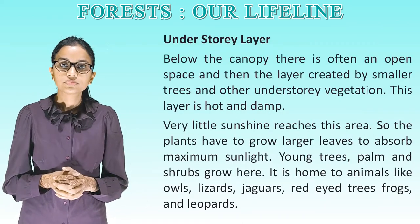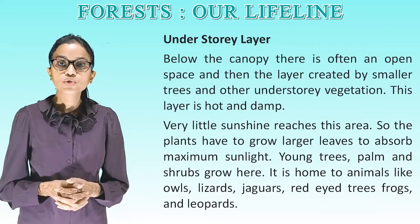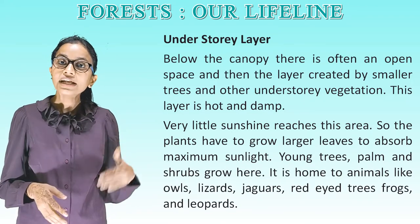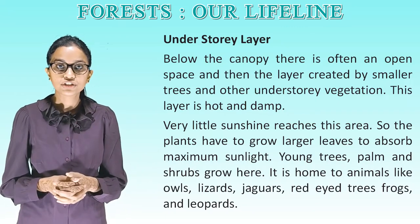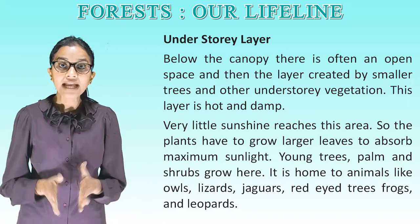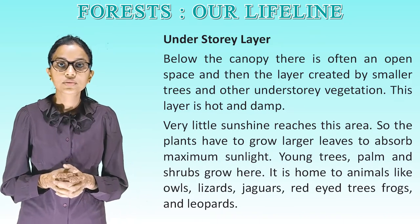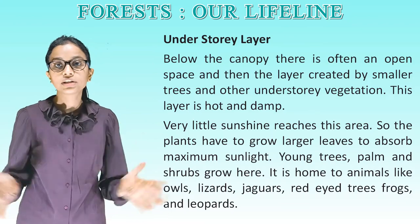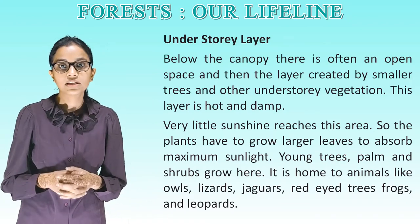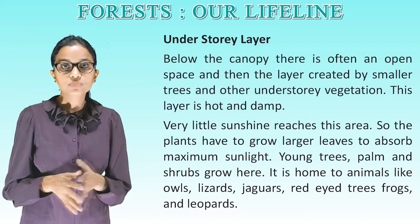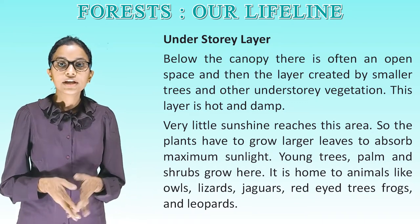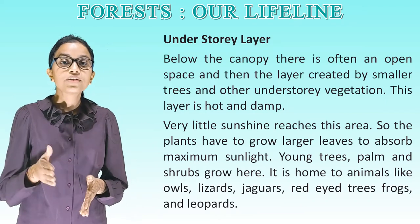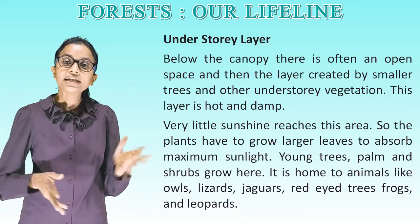Understory layer: Below the canopy there is often an open space, then the layer created by smaller trees and understory vegetation. This layer is hot and damp. Very little sunshine reaches this area, so the plants have to grow larger leaves to absorb maximum sunlight. Young trees, palms and shrubs grow here. It is home to animals like owls, lizards, jaguars, red-eyed tree frogs and leopards.